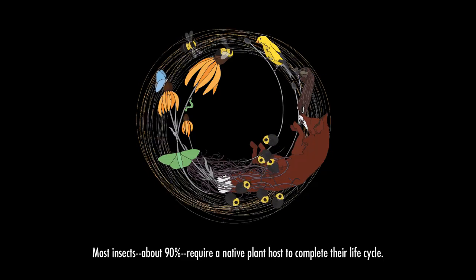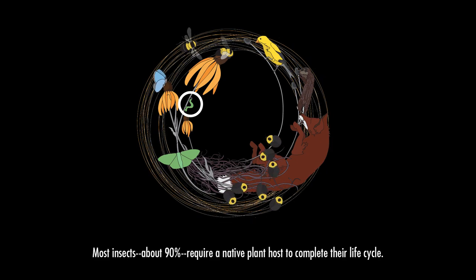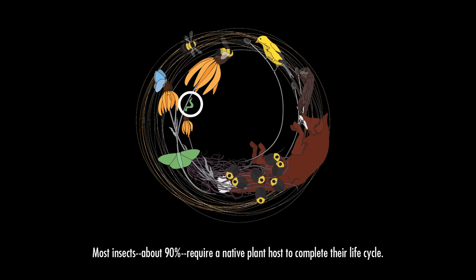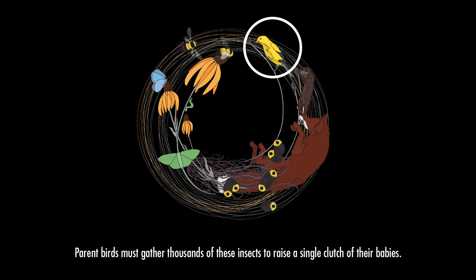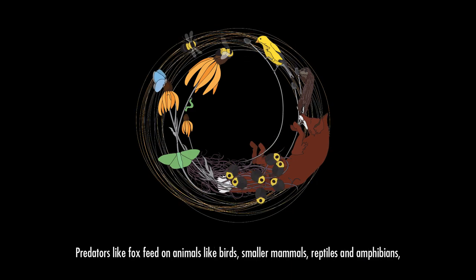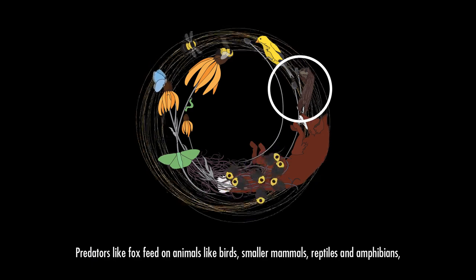Most insects — about 90% — require a native plant host to complete their life cycle. Parent birds must gather thousands of these insects to raise a single clutch of their babies.